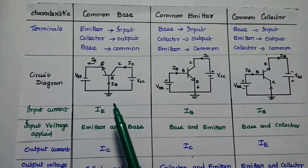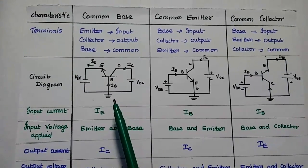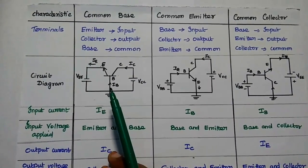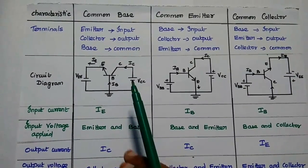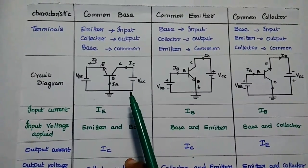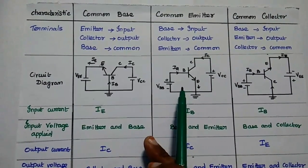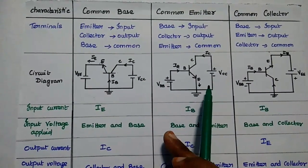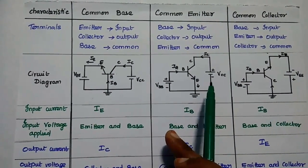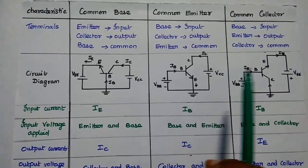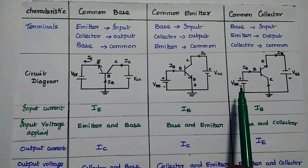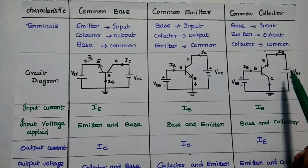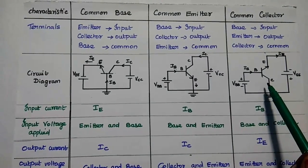Regarding circuit diagrams: for common base configuration, the input voltage is applied between emitter and base, and output is taken between collector and base. For common emitter, input is applied between base and emitter, and output is taken between collector and emitter. For common collector, input is applied between base and collector, and output is taken between emitter and collector.